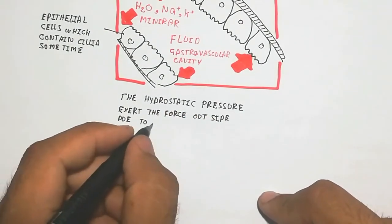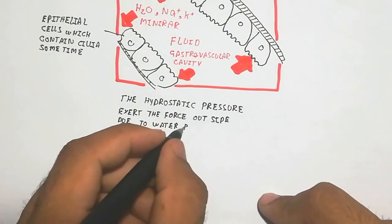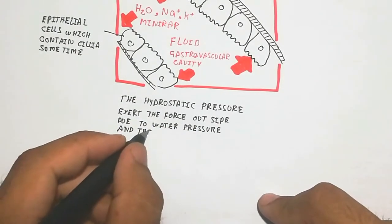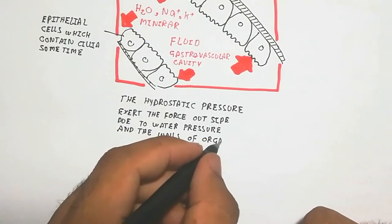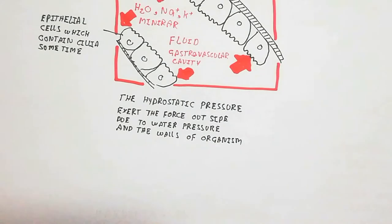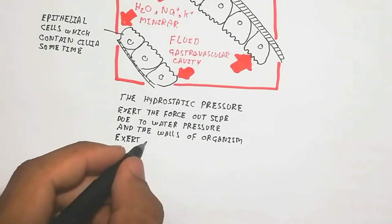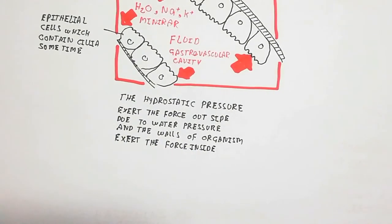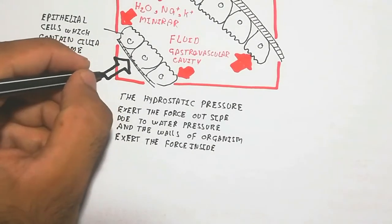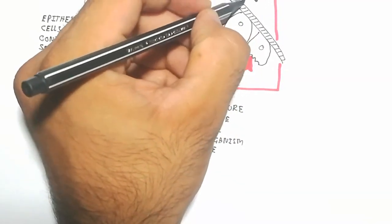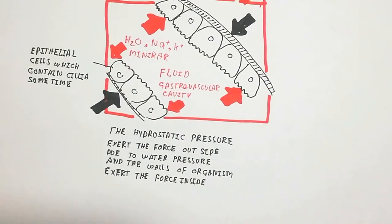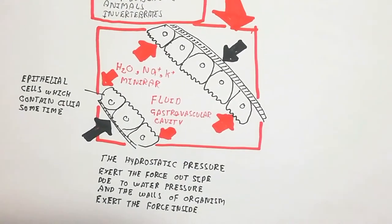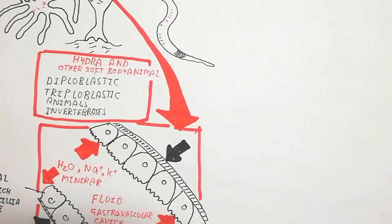The inside force is exerted by the wall of the animal, composed of epithelial cells and the outer cell layers in diploblastic animals. The hydrostatic pressure exerts force outward due to water pressure, and the wall of the organism exerts force inward. This balance of forces creates rigidity and movement. Now we will discuss the exoskeleton.